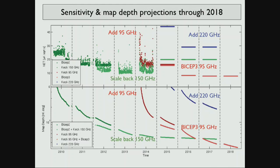We deployed 220 GHz at the end of 2014 and the sensitivity line is coming down — we're about midway. This is helping because there's enhanced sensitivity to the dust template. Even at this point our 220 GHz sensitivity to dust is already better than Planck's sensitivity to dust at 353 GHz.